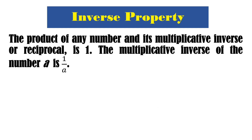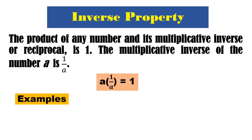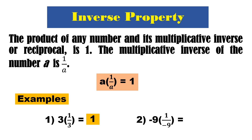Next is the multiplicative inverse. The product of any number and its multiplicative inverse or reciprocal is 1. The multiplicative inverse of A is 1 over A. Kapag multiplicative inverse, reciprocal — ang reciprocal ni A is 1 over A. So A times 1 over A equals 1. Examples: the reciprocal of positive 3 is 1 over 3 — so 3 times 1 over 3 equals 1. And negative 9 times 1 over negative 9 equals positive 1.